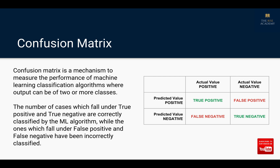True positive and true negative — the two values highlighted in green — are the records which have been correctly predicted and match their actual value. Whereas the records which fall under false positive and false negative, marked here in red, have been classified wrongly. It may not seem very clear from here, so let's look at an example and then it will make sense.